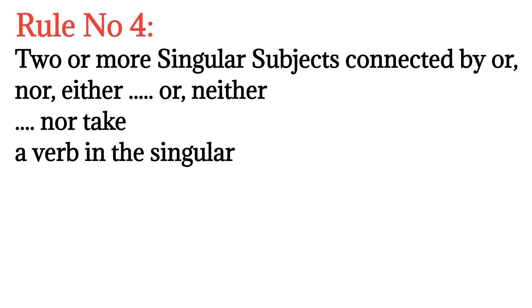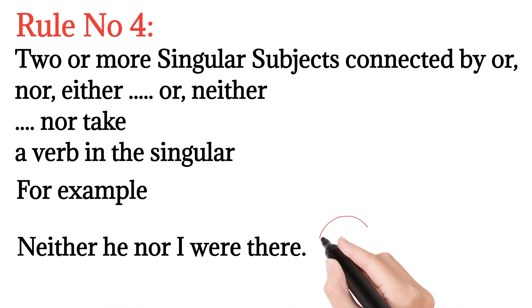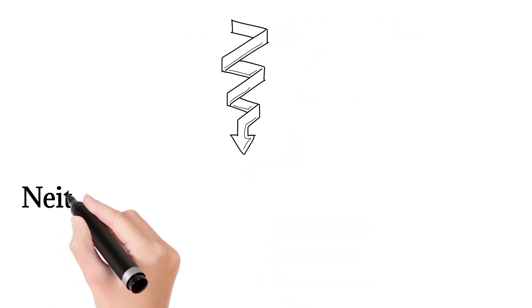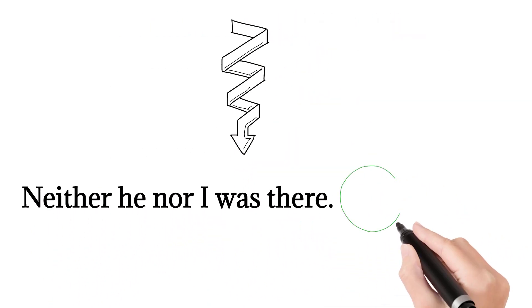Rule number four: When singular subjects are joined by 'either-or' or 'neither-nor', they take a verb in the singular. For example, 'neither he nor I were there' - the correct form of this sentence is 'neither he nor I was there'.